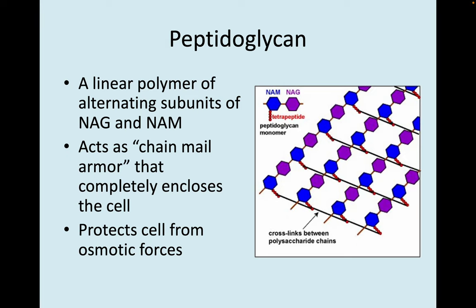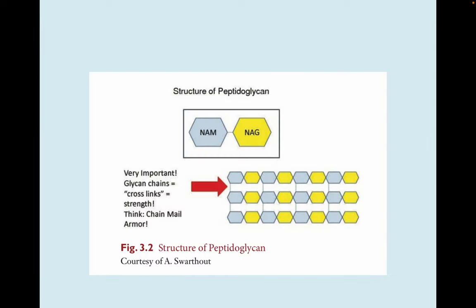Peptidoglycan is a linear polymer of alternating subunits of N-acetylglucosamine (NAG) and N-acetylmuramic acid (NAM). These act as chainmail armor that completely encloses the cell. There are cross-links between these polysaccharide chains, which make a chainmail of peptidoglycan that protects the cell from osmotic forces — too much or too little water. You should know that peptidoglycan is made of alternating units of NAM and NAG with cross-links that add strength.